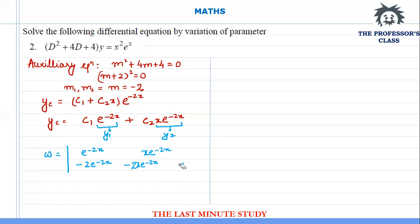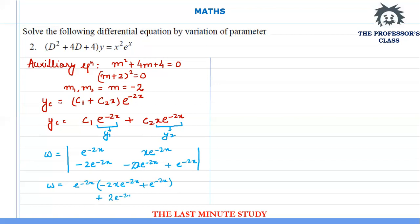Differentiating y2 by parts: keep x constant and differentiate e^(-2x) to get -2x·e^(-2x), then differentiate x to get e^(-2x). So y2' = -2x·e^(-2x) + e^(-2x).